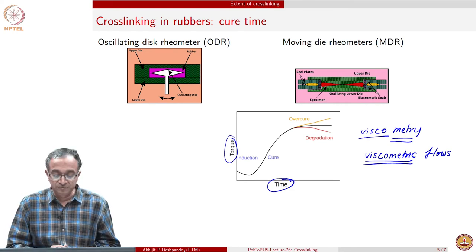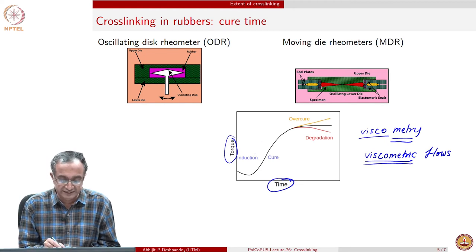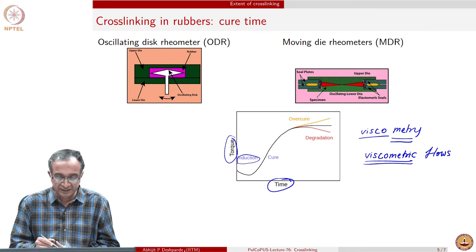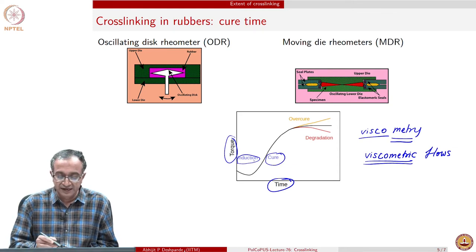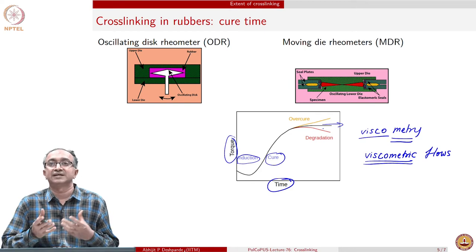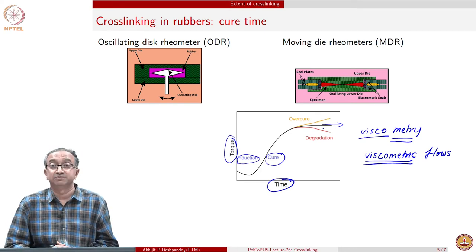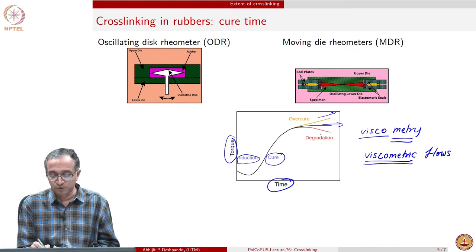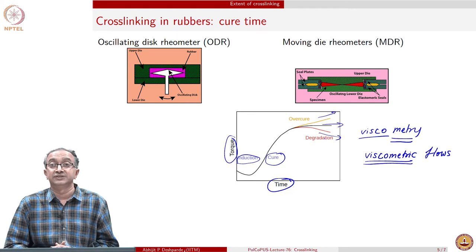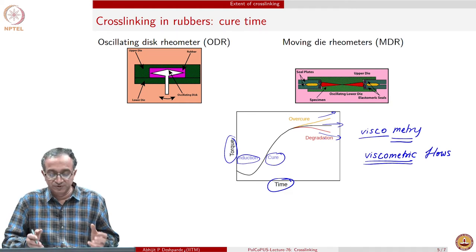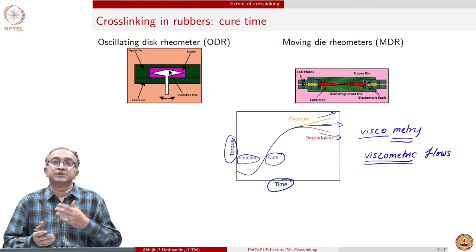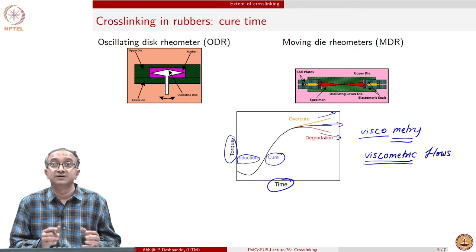From a practical point of view, the data generated in terms of torque versus time is very useful for decision making. Generally, initially the torque would remain constant or decrease as temperature is changing, and then curing or crosslinking starts occurring. Beyond a certain point when crosslinking is complete, the overall torque required does not change much with time. But depending on what is going on in the sample, there could be additional crosslinking which is not desired, or there could also be degradation due to the thermal energy and temperatures involved. Such data is useful for deciding the molding conditions and the overall temperature and pressure to be utilized for several processing operations related to rubbers.